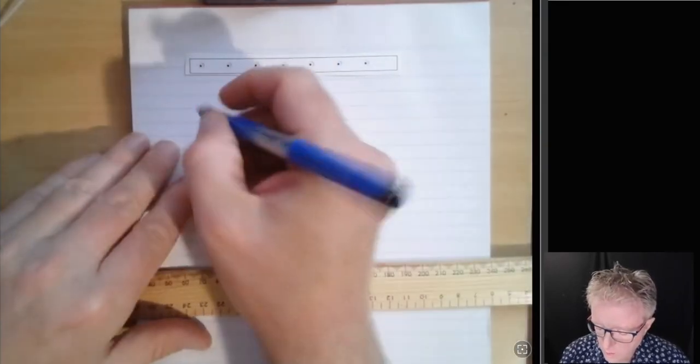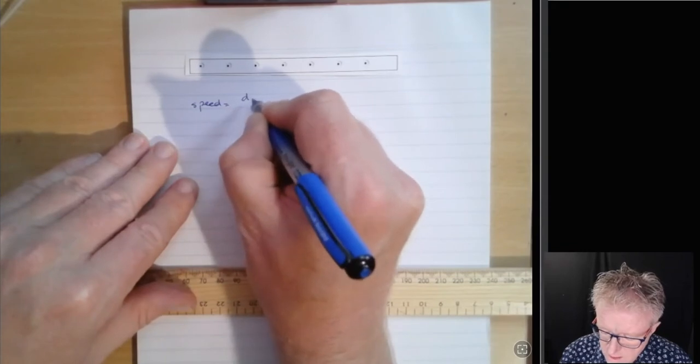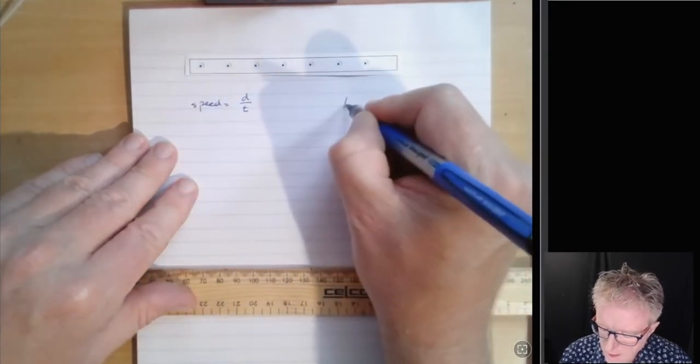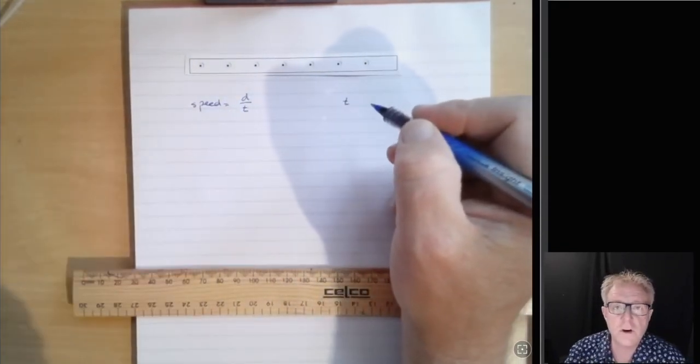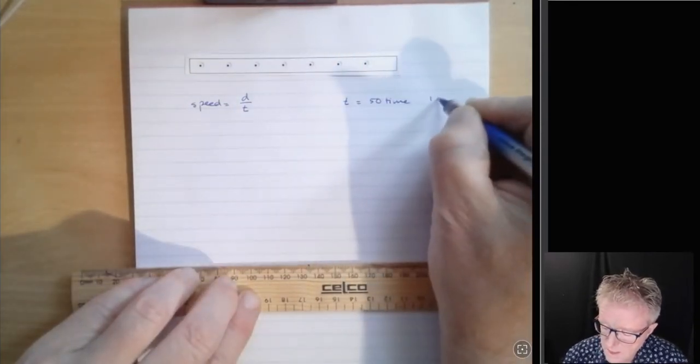So what does that mean? Well, in order to calculate speed, we need to know distance and we need to know time. Now, the time is due to the ticker tape device itself. It goes up and down 50 times in one second.